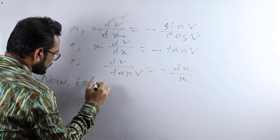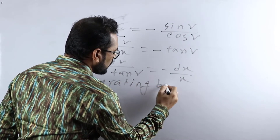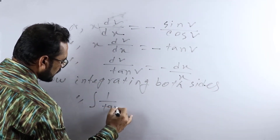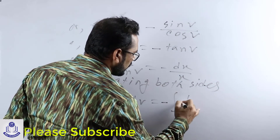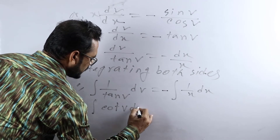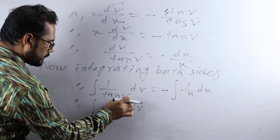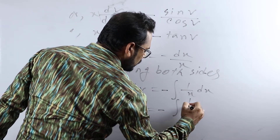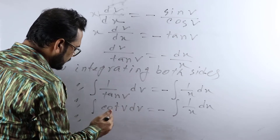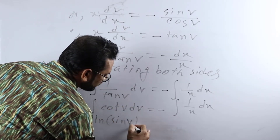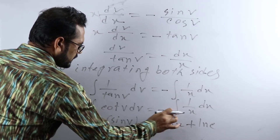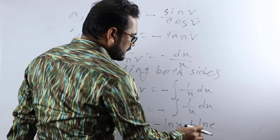Integrating both sides: the integral of 1/tan(v) dv equals the integral of minus 1/x dx. Since 1/tan(v) equals cot(v), this becomes the integral of cot(v) dv equals minus integral of 1/x dx. Using the standard formula, the integral of cot(v) dv equals ln|sin(v)|, so we get ln|sin(v)| equals minus ln(x) plus ln(c), where ln(c) is the constant of integration.